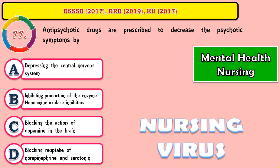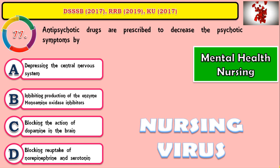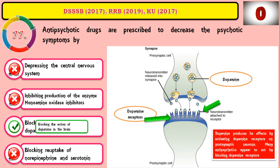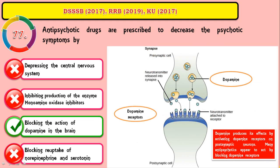Question 77: Antipsychotic drugs are prescribed to decrease the psychotic symptoms by? The correct answer is: blocking the action of dopamine in the brain. Antipsychotic drugs block the D2 receptors, which are mainly present in the mesolimbic and mesocortical system — the area mainly responsible for our emotional reactions. Another area is the nigrostriatal system and tuberoinfundibular system, where the drug commonly acts.